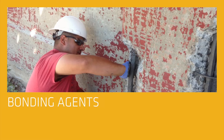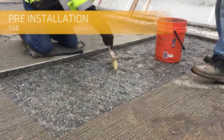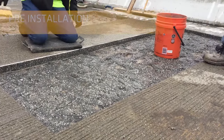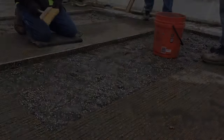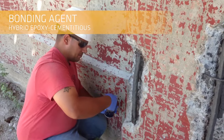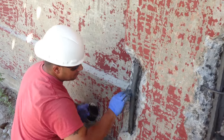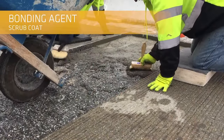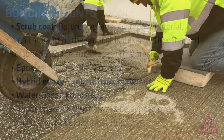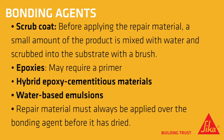In concrete repair, bonding agents are used to achieve a better bond between a repair material and a substrate. Thoroughly wet the surface to produce a saturated surface dry (SSD) in order to achieve a better bond. Hybrid epoxy cementitious materials are brushed on, sprayed, or applied with hands onto the substrate and reinforcement. They can offer corrosion protection and act as a bonding aid. Scrub coats are the most basic type of bonding aid — a small amount of the repair product is mixed with water and scrubbed into the substrate with a masonry brush. Epoxy bonding agents are mixed and brushed or sprayed onto the substrate and reinforcement. Repair materials must always be applied while the bonding agent is still wet or tacky to achieve maximum bond.